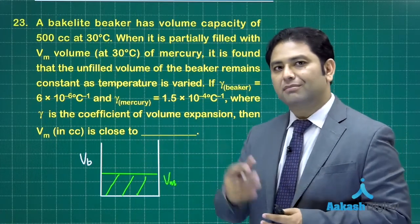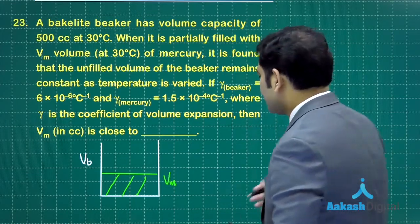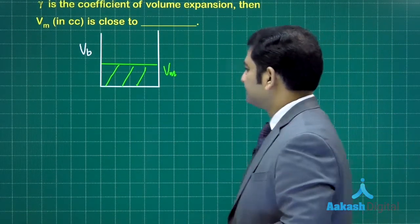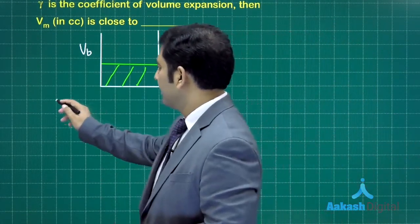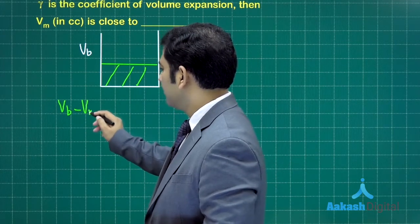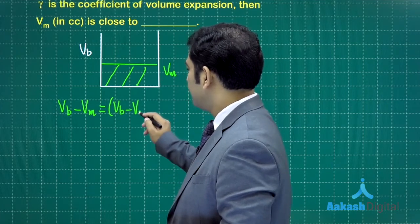Based on that we need to calculate the value of Vm. The coefficient of volumetric expansion, gamma for both mercury and bakelite, is given. So what can we do? We can start in this way. What is the original volume of the unfilled part? Vb minus Vm.